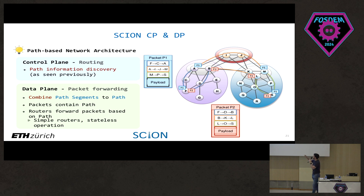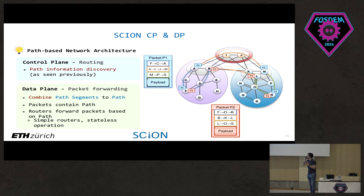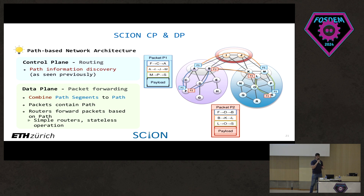Packets belonging to the same application can be sent using two different, even disjoint paths simultaneously. For example, an application could use a low-latency path for its control channel and a higher-bandwidth path for the actual application data.